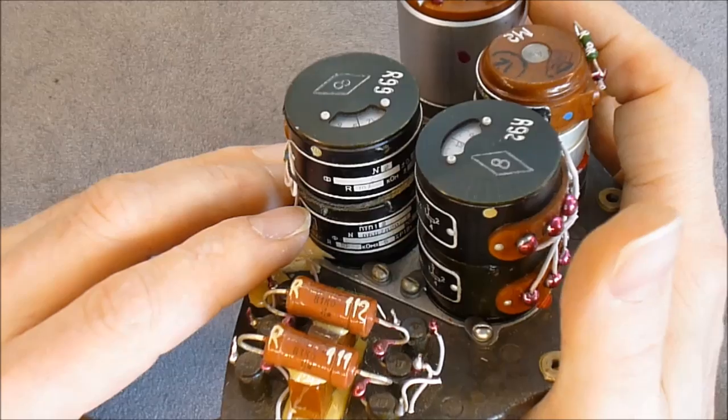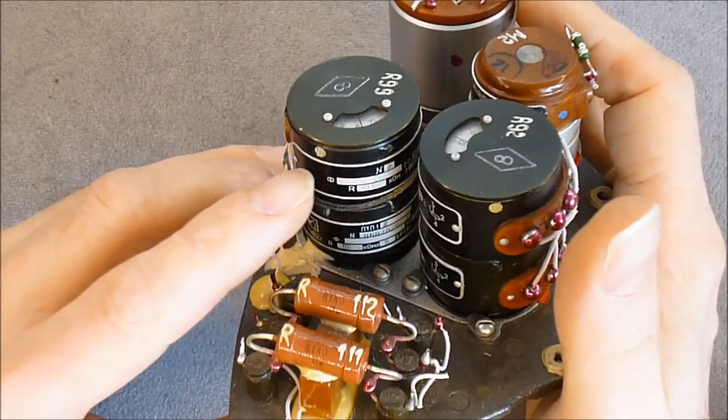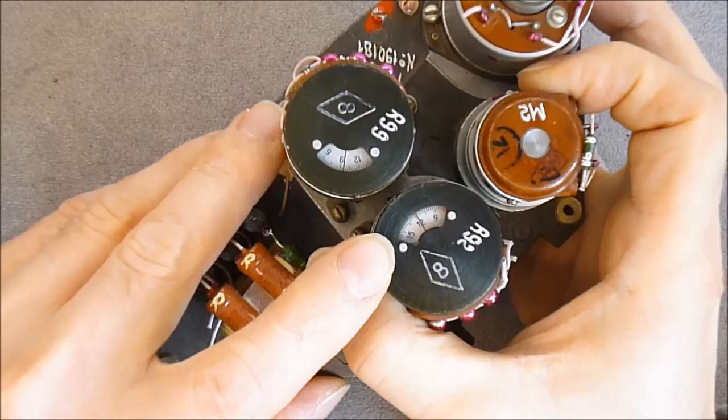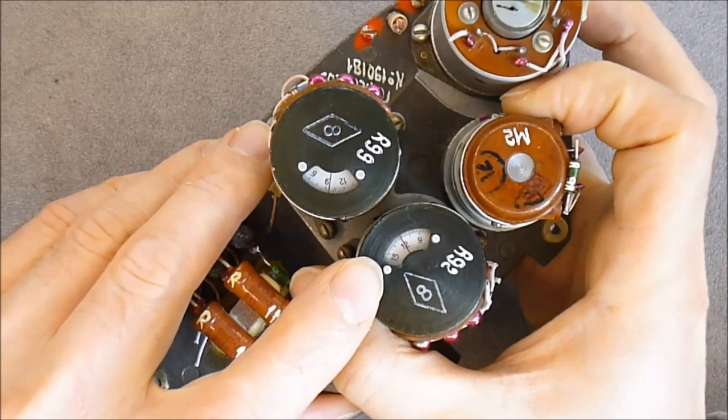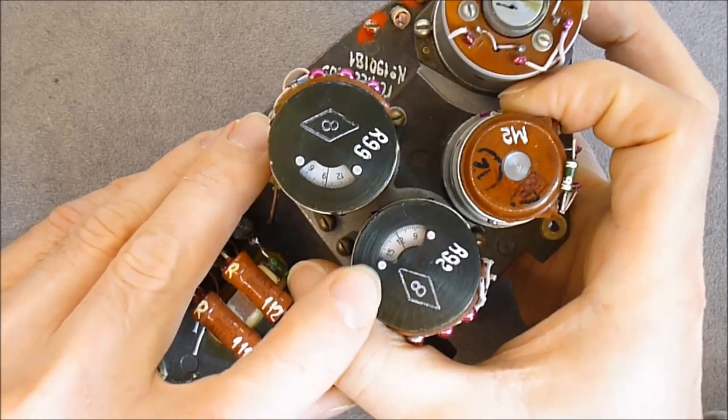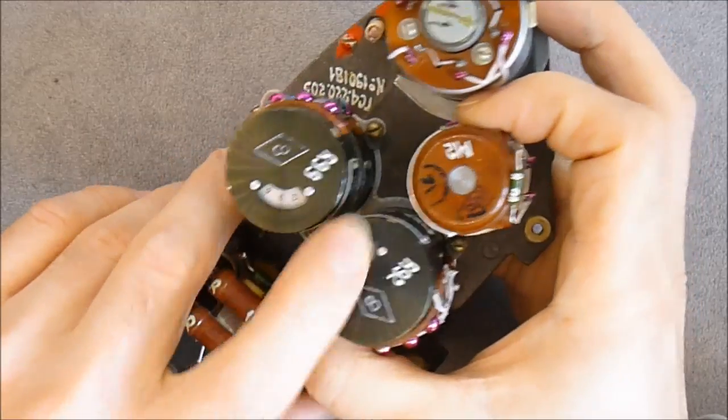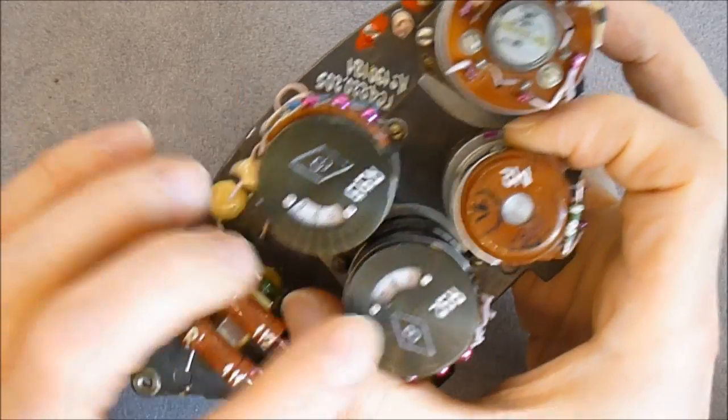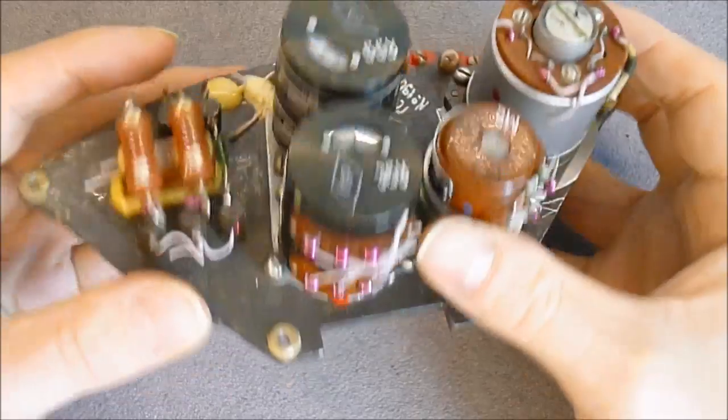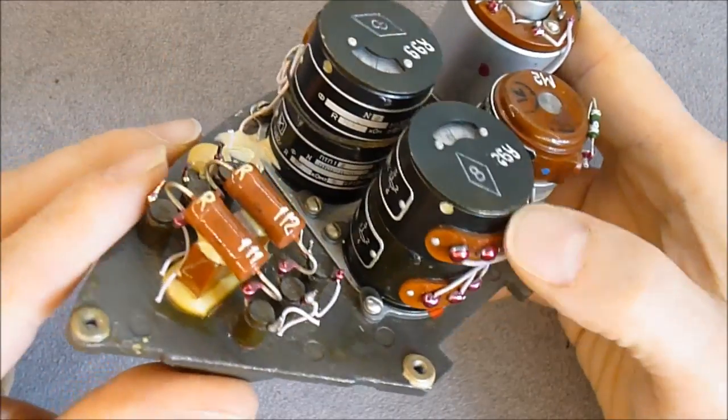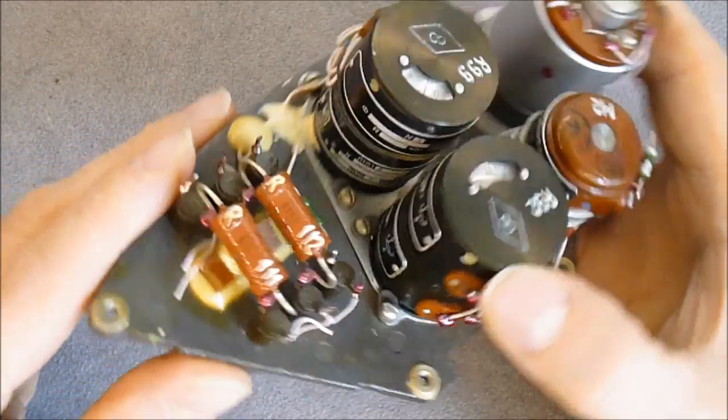They are 10 kiloohms, 5%. And you can see there is a little dial at the back side letting you know how much the setting is. So they are very expensive, high precision potentiometers.